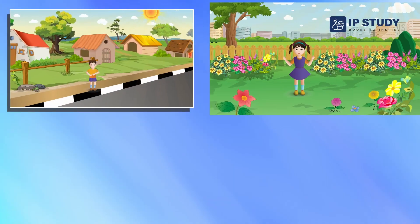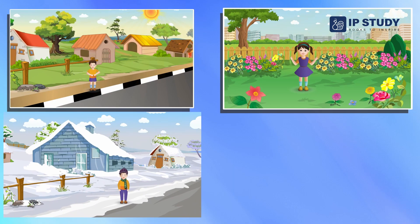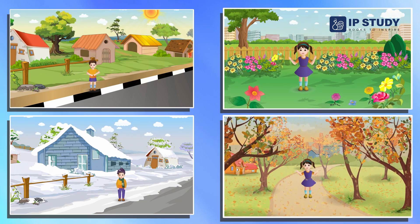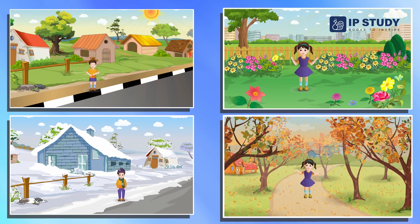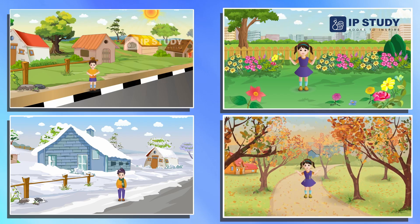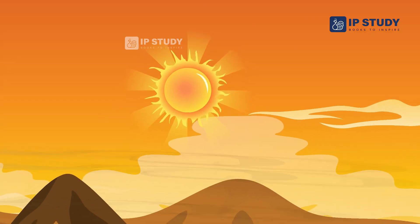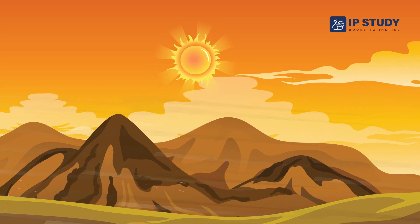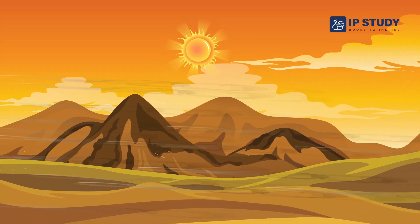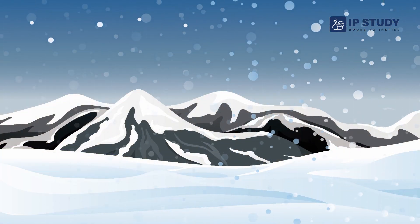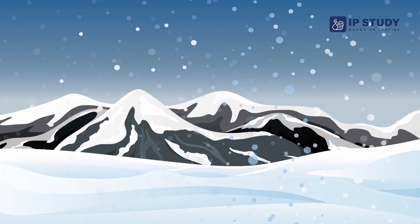Autumn is one of the four significant seasons in a year. Autumn changes the season from summer to winter since it falls between them. Autumn comes at different times in different places of the world, as it is a transition period between the heavy monsoon rains to chilly winters.